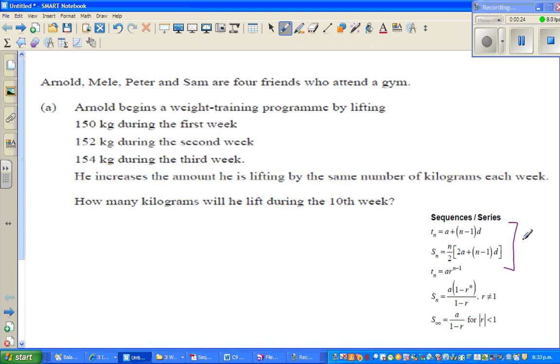These three are for the geometric sequence. Let's read the question. Arnold, Mele, Peter and Sam are four friends who attend the gym. Arnold begins a weight training program by lifting 150 kg during the first week, 152 kg during the second week, 154 kg during the third week.